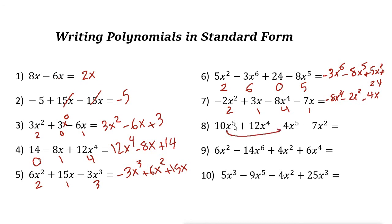This one has degrees 5, 4, 5, and 2. First, combine the like terms: 10x to the power of 5 minus 4x to the power of 5 is 6x to the power of 5. The degree 4 term gives plus 12x to the 4th, and then minus 7x squared.